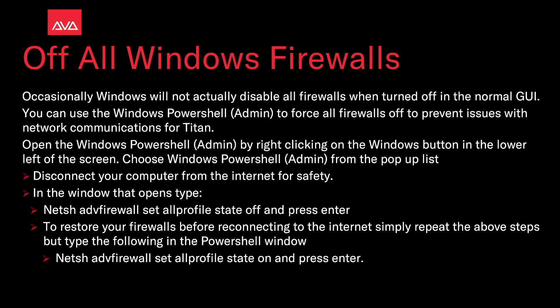Open the Windows PowerShell admin by right-clicking on the Windows button in the lower left of your screen, choosing Windows PowerShell admin from the pop-up list. For safety, you should disconnect your computer from the internet before doing this.